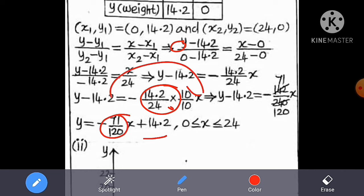If we cross out, then we get y equal to minus 71 by 120 times x plus 14.2. Right?